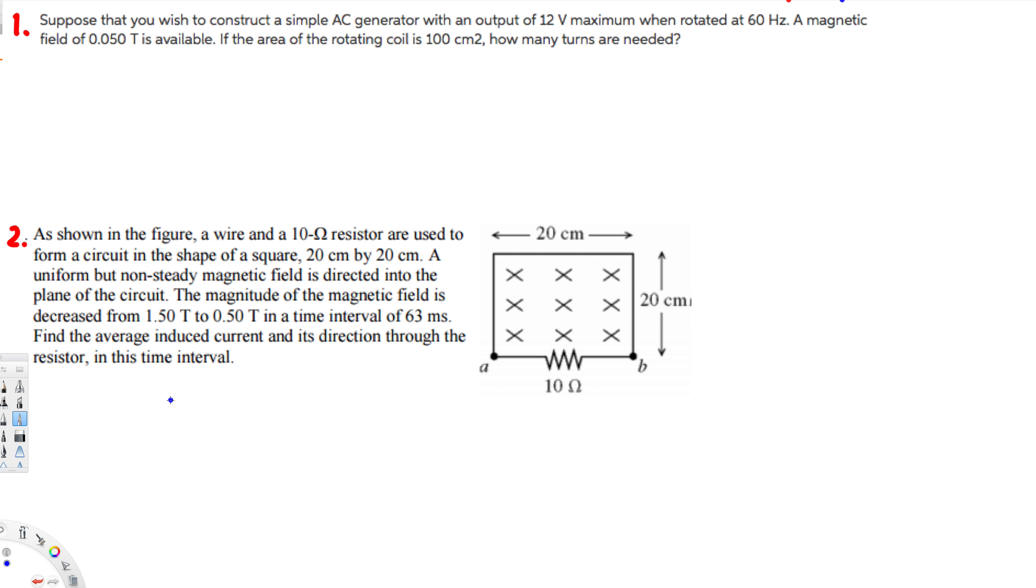Hey, what's going on guys, let's do this problem right here. The first question is asking: suppose that you wish to construct a simple AC generator with an output of 12 volts maximum when rotated at 60 Hertz, where a magnetic field of 0.05 Tesla is available. If the area of the rotating coil is 100 centimeter square, how many turns are needed?